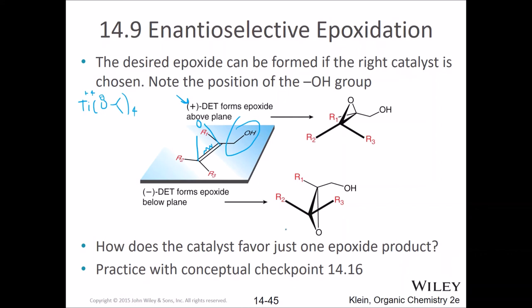The catalyst favors just one epoxide product — that was hinted at in the last slide. Go now and practice with Conceptual Checkpoint 14.16. I do have another video on this with more details, which I'll post on D2L as an additional element. This is what the book describes, and I'm trying to stick close to the book and keep these lecture videos short. Good luck.